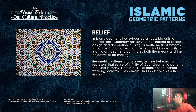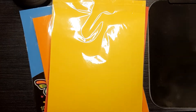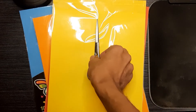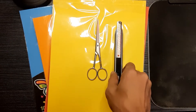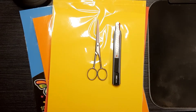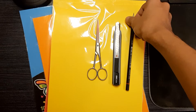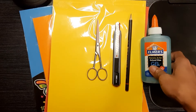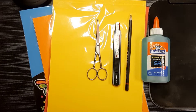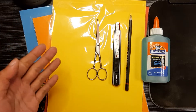Let's try to imitate the Islamic geometric patterns. For the materials, you need colored papers, scissors or cutter — but if you use a cutter, you need assistance from a guardian or parent — pencils, colors, and ruler. You might also want to prepare erasers and tape for your errors.